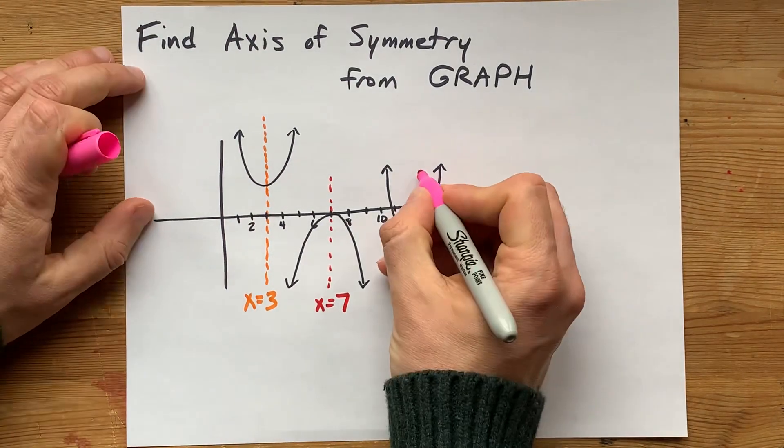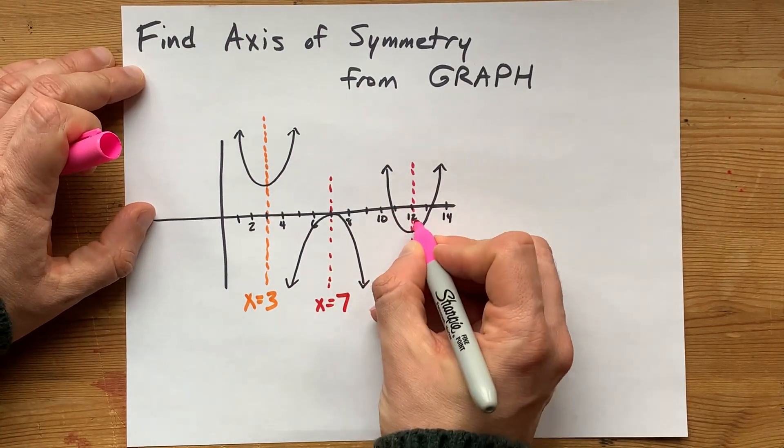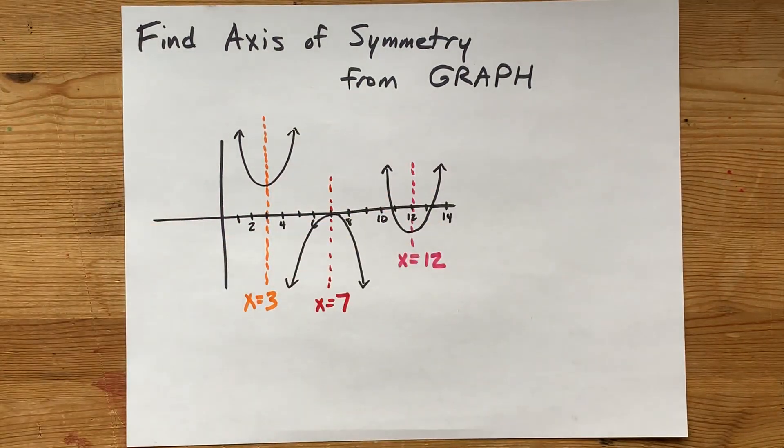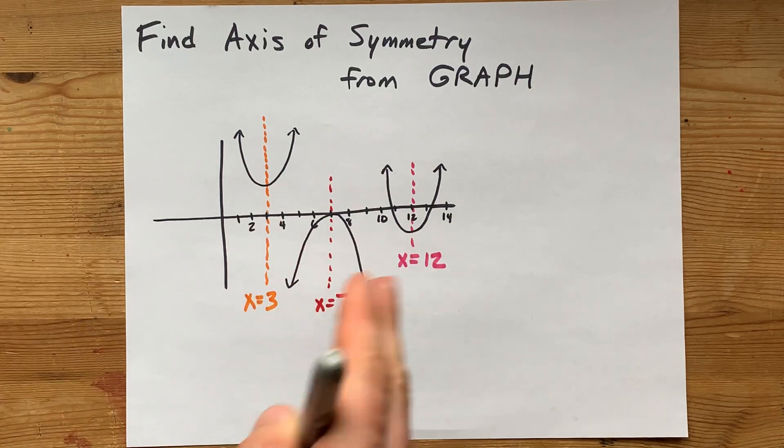Let's do it again. Here's a parabola. Cut it in half. Looks like it goes through 12. x equals 12. You'll notice the axis of symmetry of all these parabolas is x equals something.